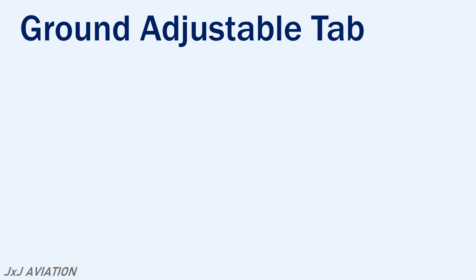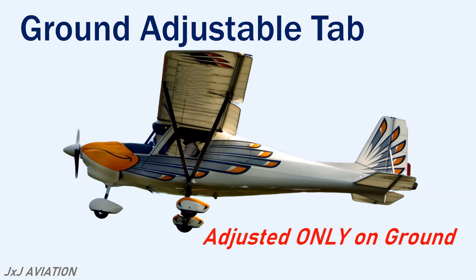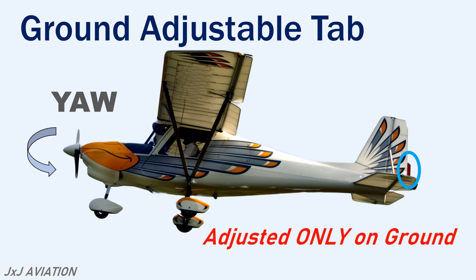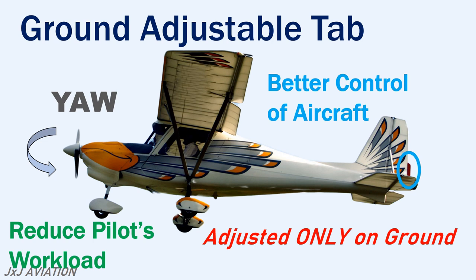Ground adjustable tab. As the name suggests, this tab can be adjusted only when the aircraft is on the ground. This tab can be mostly found on the rudder of small single engine aircraft. Because of the propeller, the aircraft will tend to yaw towards one direction. This tab may be moved to a small angle to provide better control of the aircraft on the ground and in flight, and reduces the pilot's load of giving rudder input continuously.